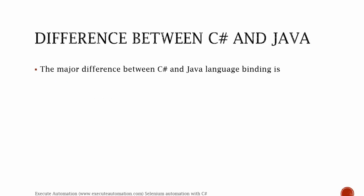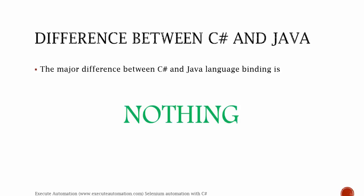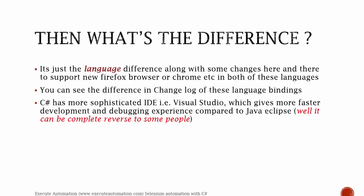So what is the major difference between C Sharp and Java language bindings? It's nothing significant — just a language difference along with some changes here and there to support new Firefox or Chrome in both languages. If you look at the changelogs of these two language bindings, you'll see some differences: the C Sharp binding notes some Firefox browser updates are missing, whereas the Java binding has other updates like the latest Firefox version support.